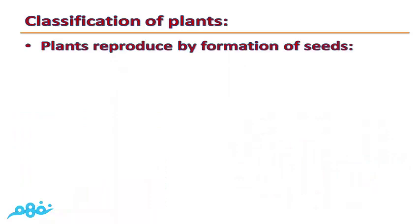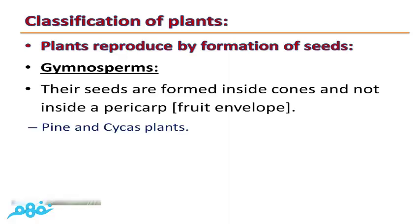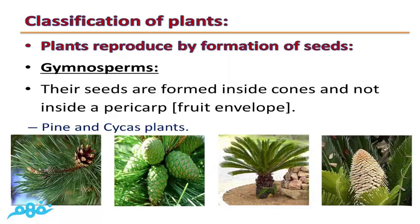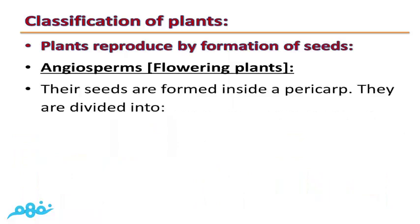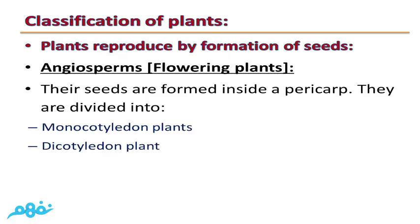Gymnosperms are plants whose seeds are formed inside cones and not inside a fruit envelope, such as pine and Cycas plants. Angiosperms, or flowering plants, have their seeds formed inside a fruit. They are divided into monocotyledon plants and dicotyledon plants.